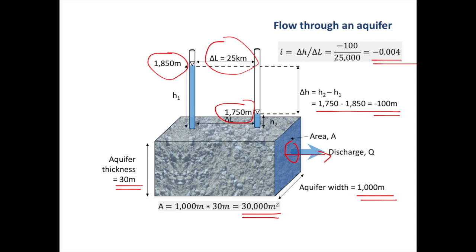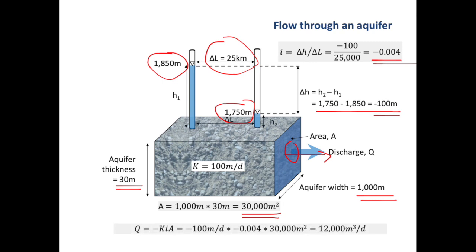The distance between the boreholes is 25 kilometers, so our hydraulic gradient will be minus 100 divided by 25,000, which is minus 0.004. The negative sign means that groundwater is flowing from left to right. Our hydraulic conductivity is 100 meters per day — quite high, as you'd expect in a gravel. Now we can calculate the discharge using Q equals minus KIA: 100 meters per day times minus 0.004 times 30,000 square meters, and we end up with 12,000 cubic meters per day.